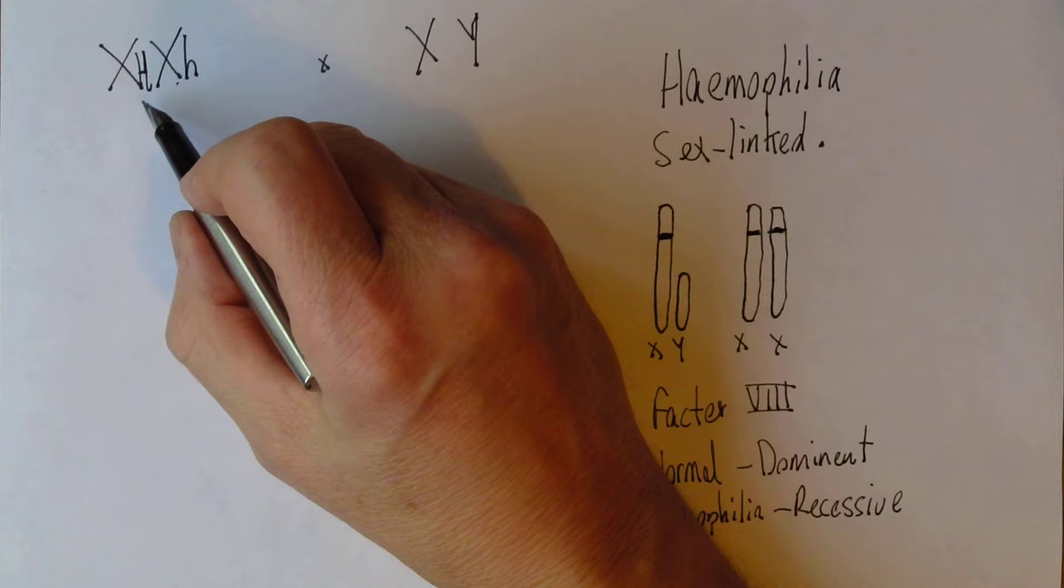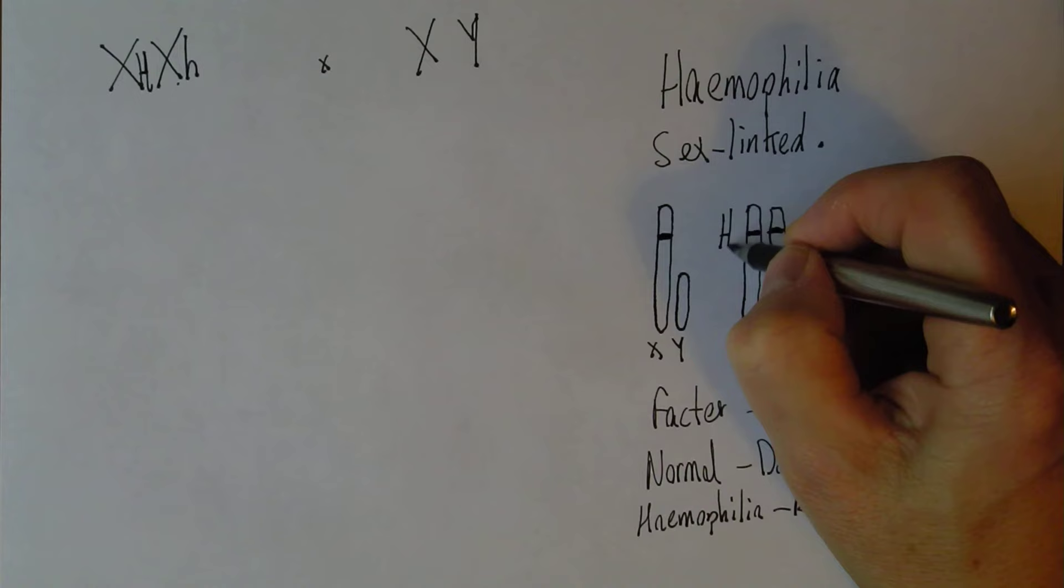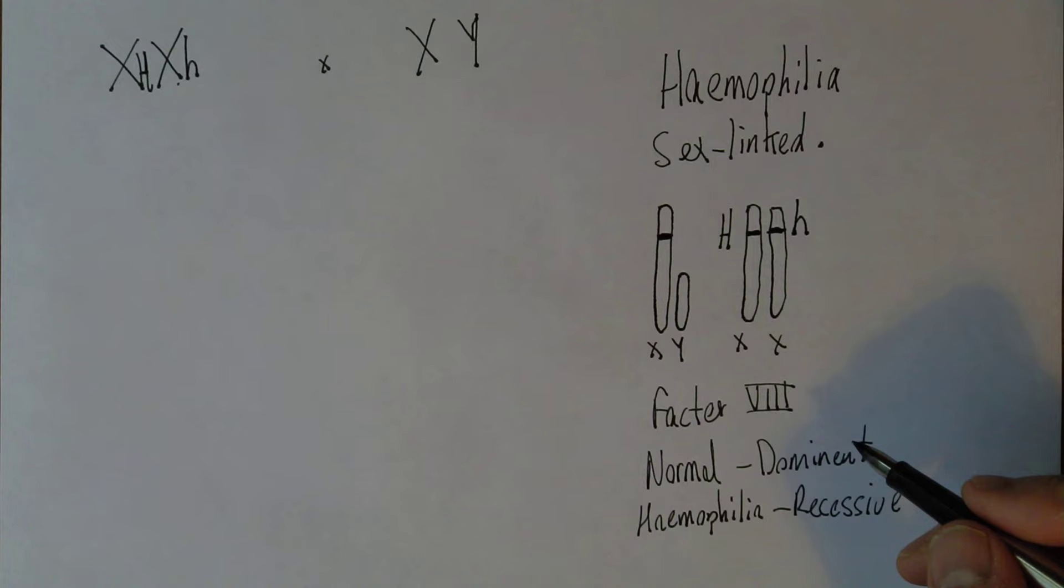This means she'll be phenotypically normal because she has one copy of the normal dominant gene. So that one will be an H, the normal dominant gene; that would be a haemophilia recessive gene in this case.